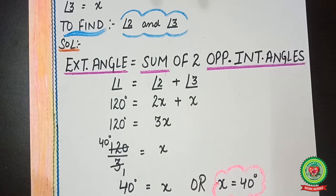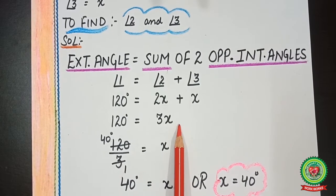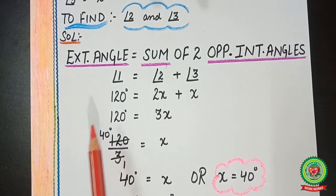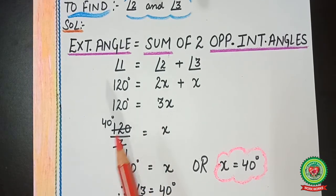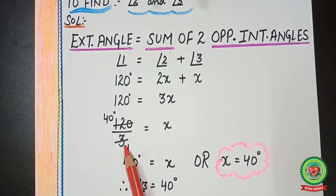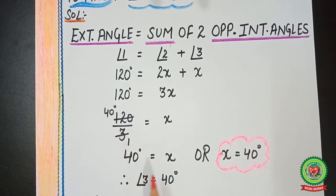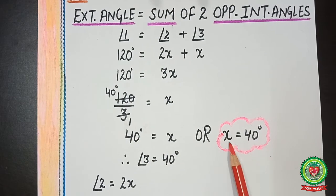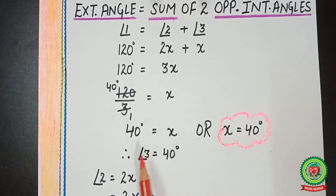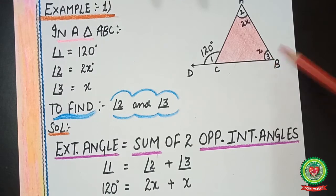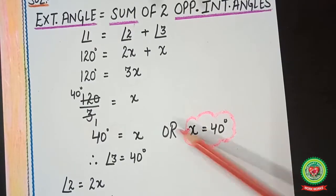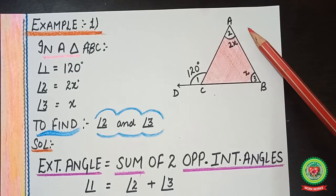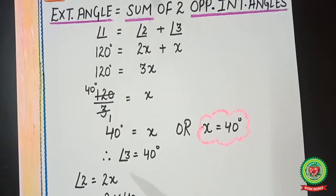Since there is no sign between 3 and x, it means multiplication. When multiplication moves to the other side, it becomes division. So 120 ÷ 3 = 40. Therefore x = 40°. Since angle 3 = x, we have found angle 3 = 40°. Now we move on to find angle 2.